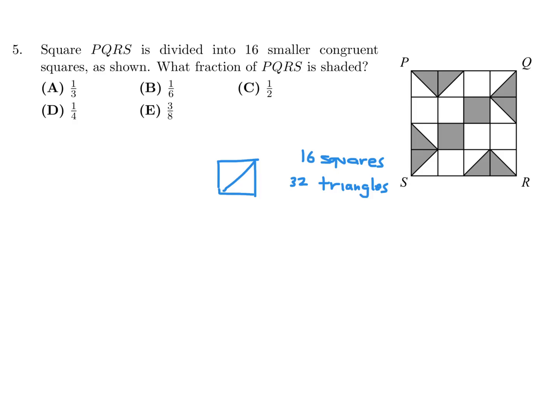And now let's count the total number of triangles. So let's go 1, 2, 3, 4. This is 5 and 6, 7, 8, 9, 10, 11, 12. So 12 of the 32 triangles is the fraction that is shaded. And in lowest terms, 6 over 16, 3 over 8. And 3 over 8 would be E.